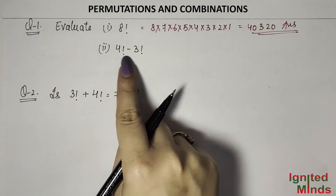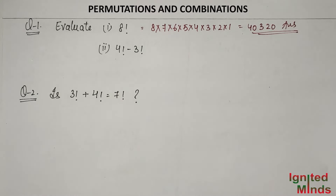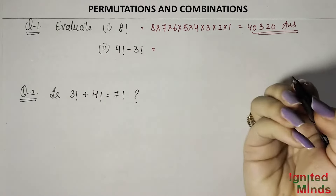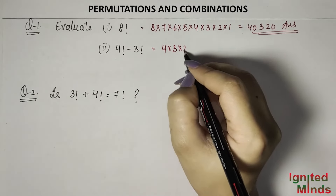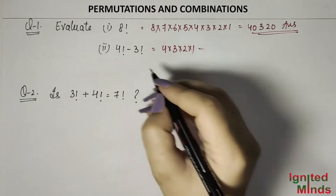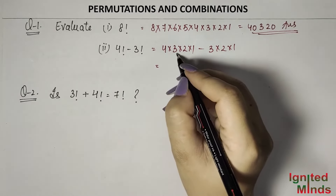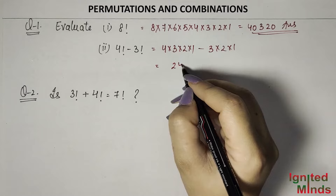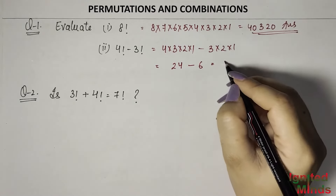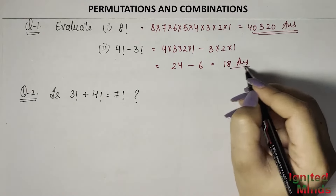Next, we have 4 factorial minus 3 factorial. There are two methods. The first is the innocent child method: open 4! as 4 × 3 × 2 × 1, and 3! as 3 × 2 × 1. So 4 × 3 = 12, 12 × 2 = 24. Minus 3 × 2 = 6. So 24 − 6 = 18. Your answer is 18.